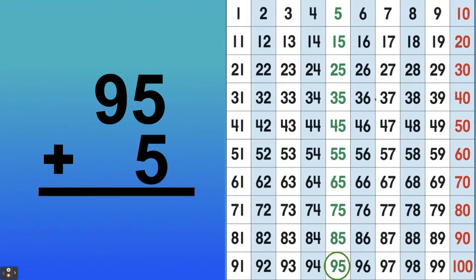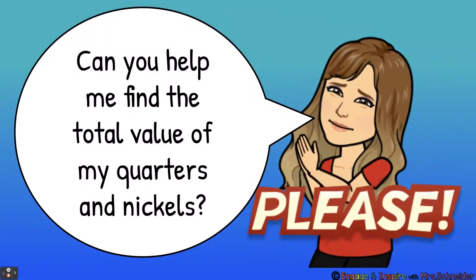This would be the same as three quarters plus a nickel. Three quarters is 75 cents plus 5 cents — a nickel — would be 80 cents. What's 95 plus 5? If you have 95 cents and you add one more nickel, it's going to be 100. Good job.